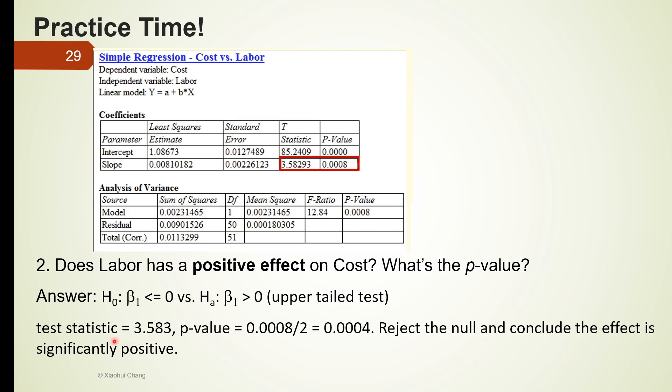Okay, the test statistic is the same. So 3.583, that's the number we get here. But the p-value given here in this table is the p-value for the 2-tailed test. Well, this particular test we're working on is a 1-tailed test, most specifically the upper-tailed test. So the p-value is half of the 2-tailed test. So you divide the p-value from 2-tailed test by 2, and this is the 1-tailed test p-value, which is also very small.